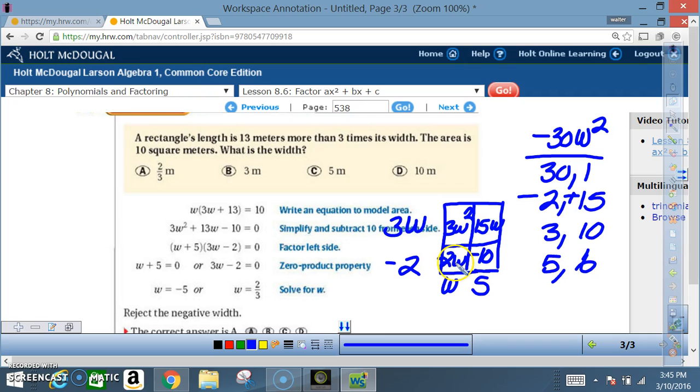And now I got a negative 2w and a negative 10. The greatest common factor is going to be a negative 2. So I have my factors: 3w minus 2, that's that, and I have w plus 5, that's that. Now...